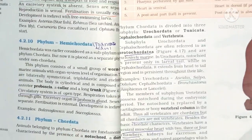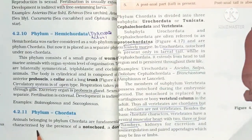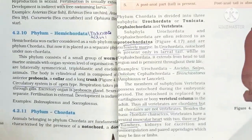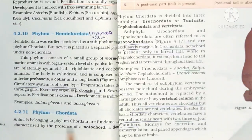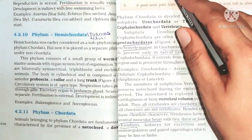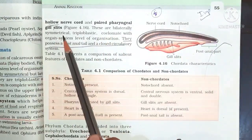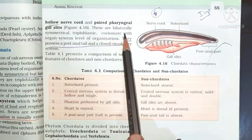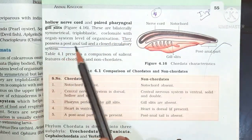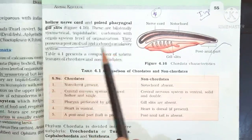Phylum Chordata: animals are fundamentally characterized by the presence of a notochord, a dorsal hollow nerve cord, and paired pharyngeal gill slits. They are bilaterally symmetrical, triploblastic, coelomate, with organ system level organization, and possess a post-anal tail and closed circulatory system.